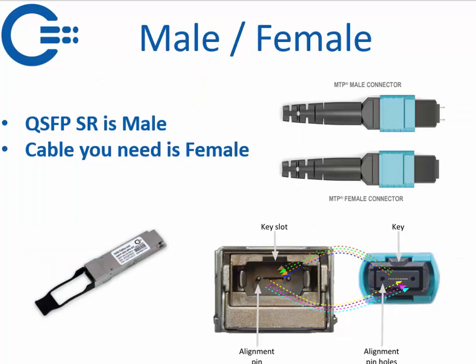There are two versions of the connector itself: male and female. The male has two small guiding pins and the female has two small holes, as you can see here. QSFPs and all the optics will have the male side, and our cables will have the female side. This is important to know if you want to connect multiple MPO cables together — you need a male and a female to have the alignment correct, otherwise the fiber alignment won't work properly.